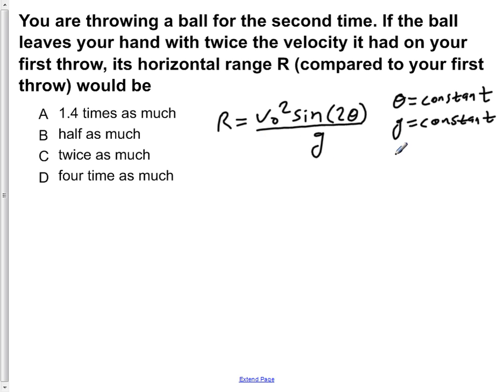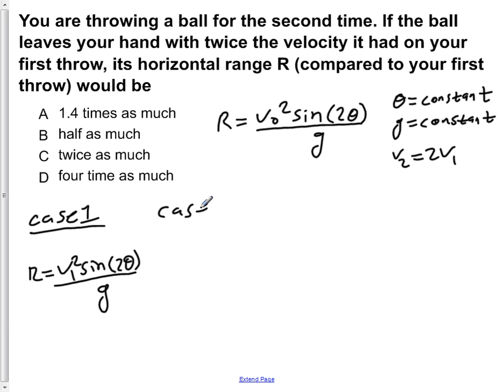But in the second throw, we have twice the initial velocity. So V₂ is twice the velocity of V₁. For case one, the first time you throw it, R is equal to V₁² sin(2θ) over g. In the second case, your second throw, R is equal to V₂² sin(2θ) over g. But V₂ is equal to 2 times V₁.